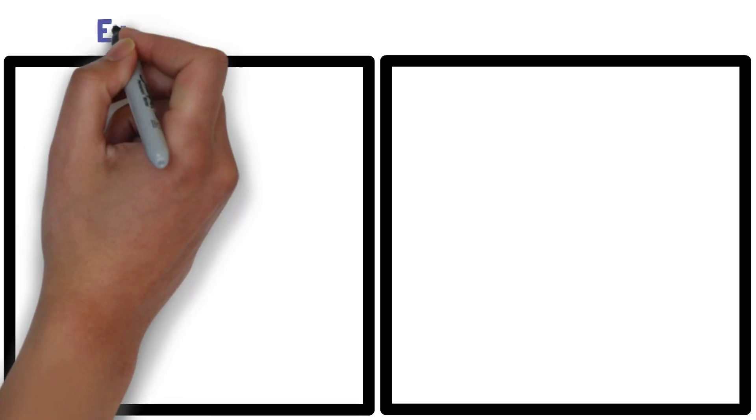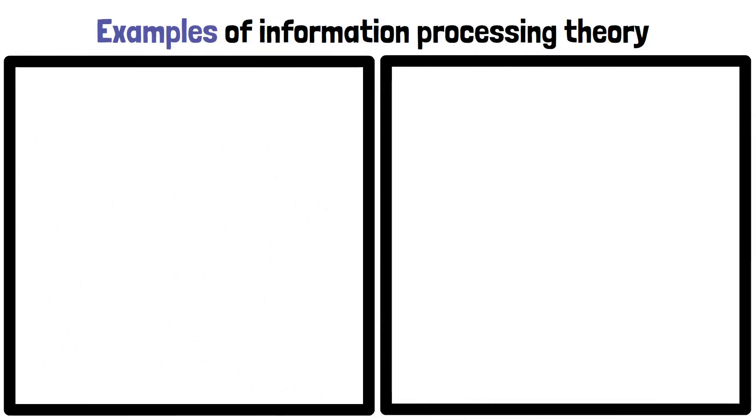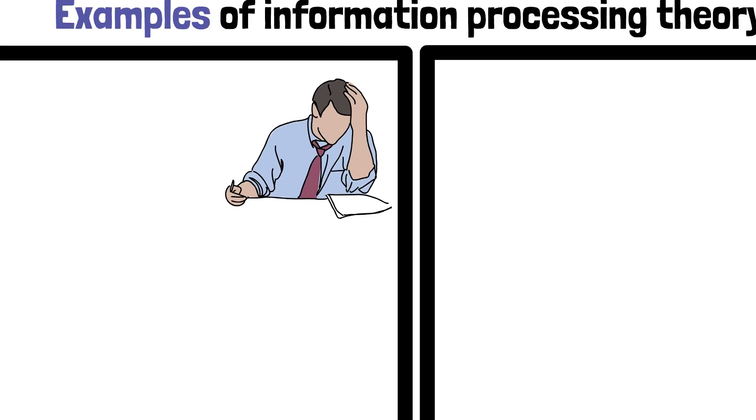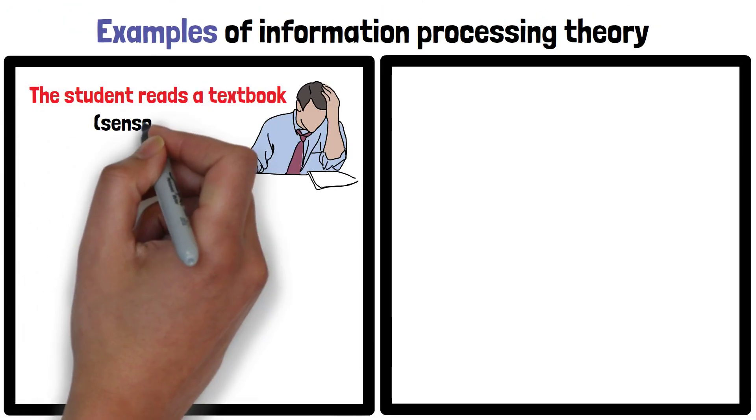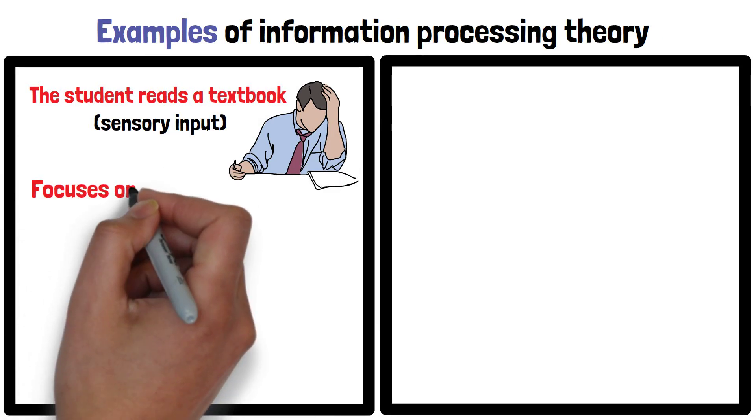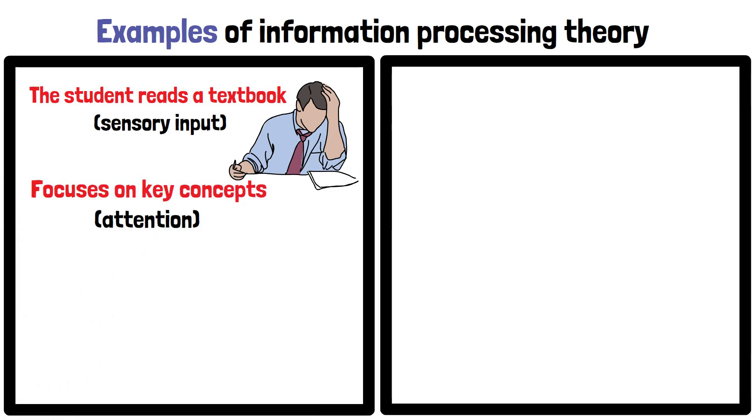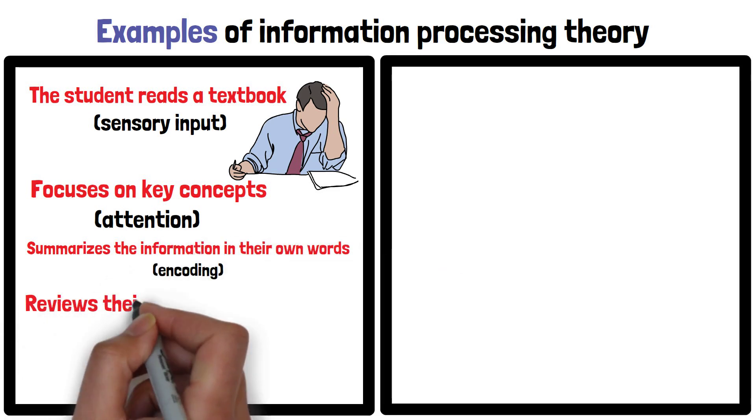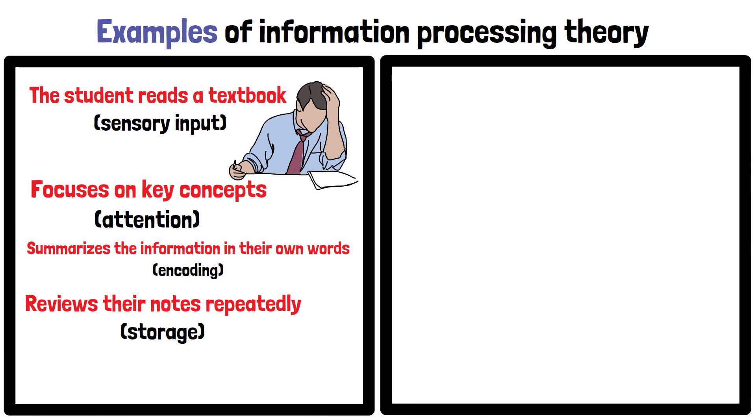Here are two examples of information processing theory. First, consider a student studying for an exam. The student reads a textbook (sensory input), focuses on key concepts (attention), summarizes the information in their own words (encoding), reviews their notes repeatedly (storage), and recalls the information during the test (retrieval).